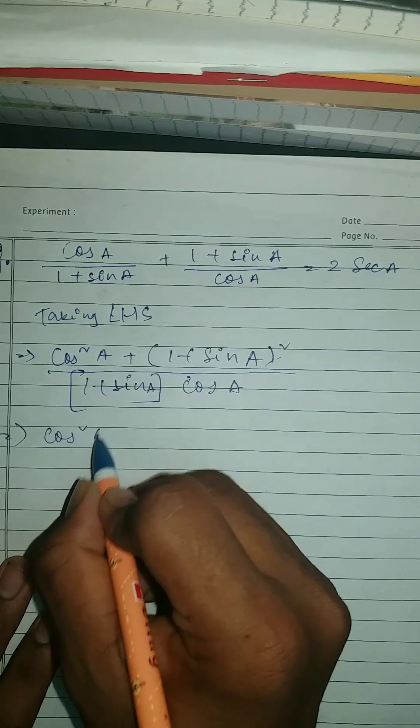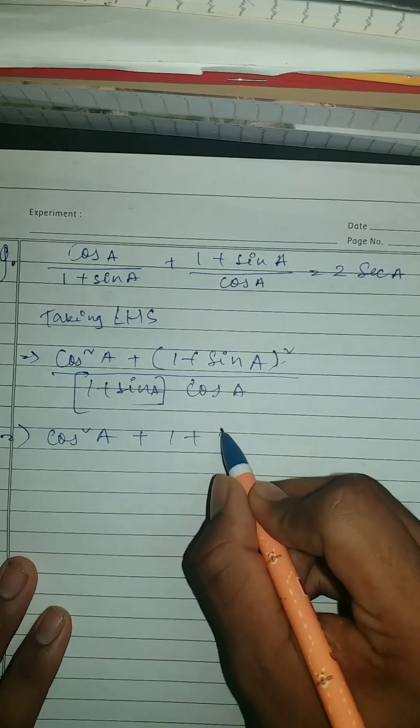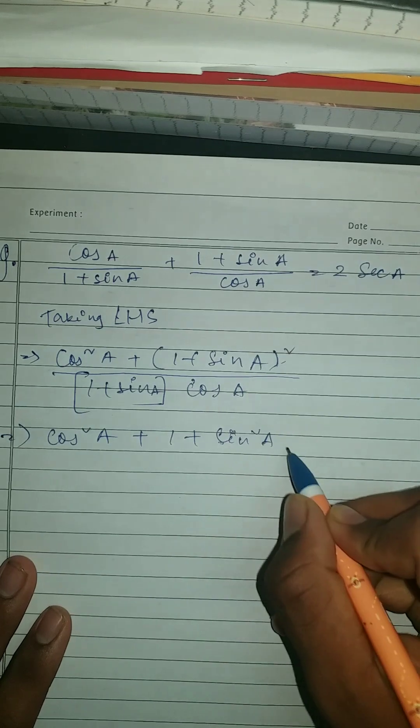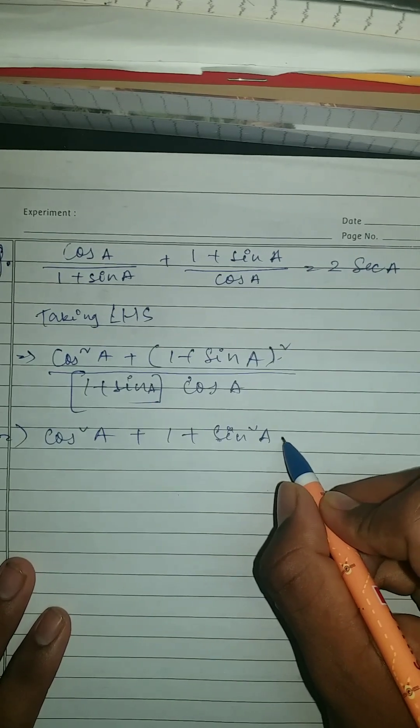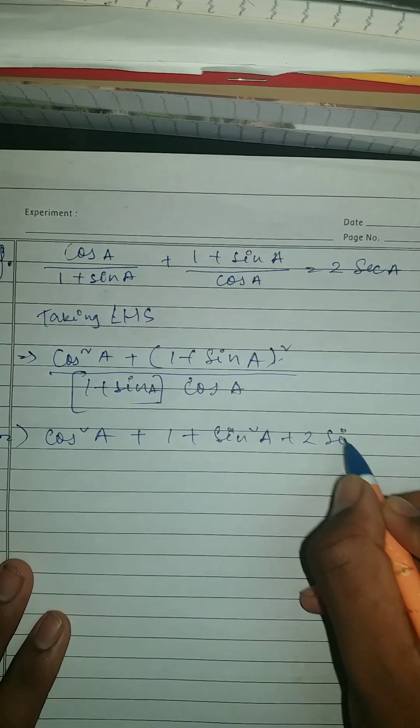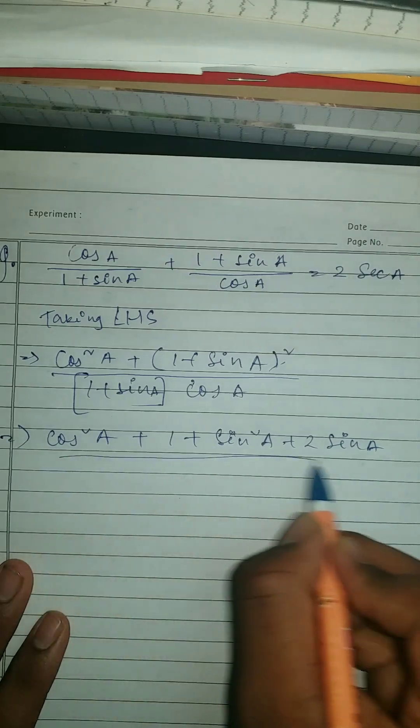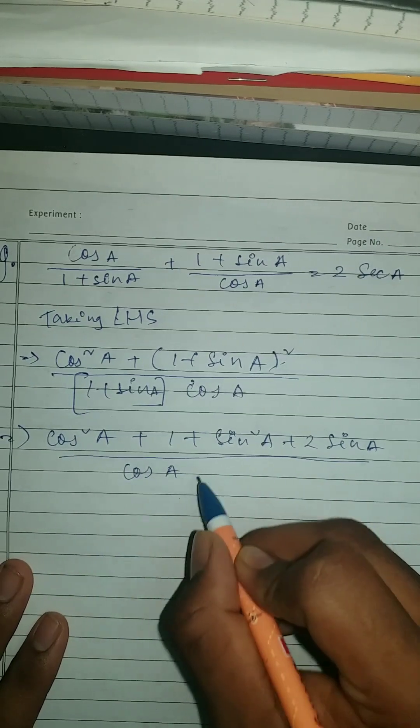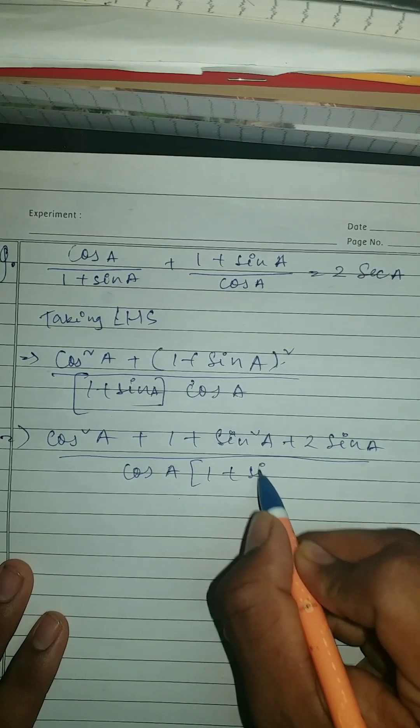So we're going to do whole square, which is your cos square a plus 1 plus sine squared a. Then it should be your plus 2 sine a cos a, 1 plus sine a.